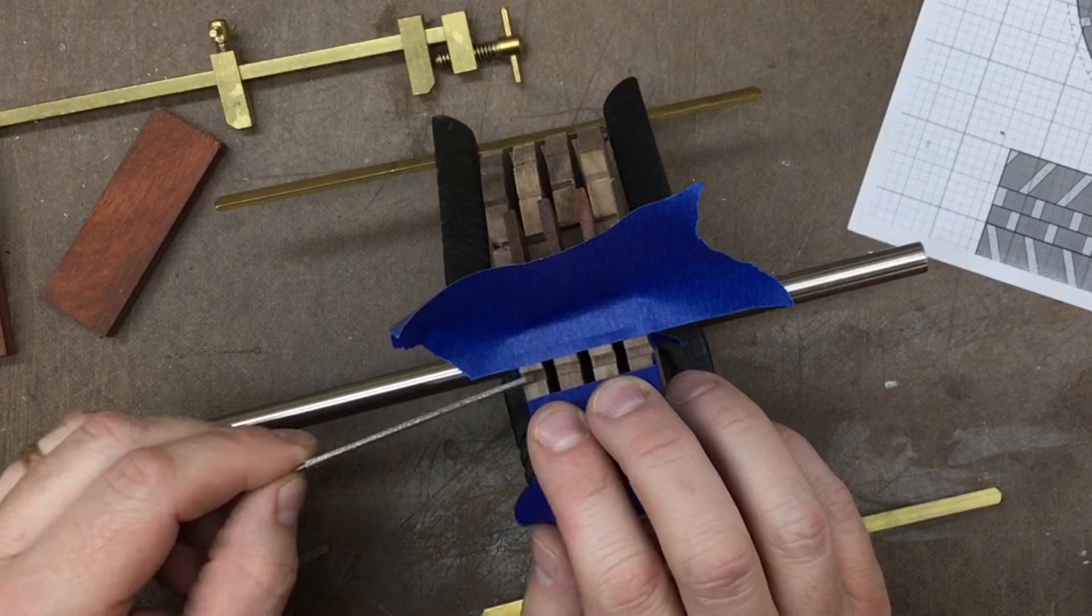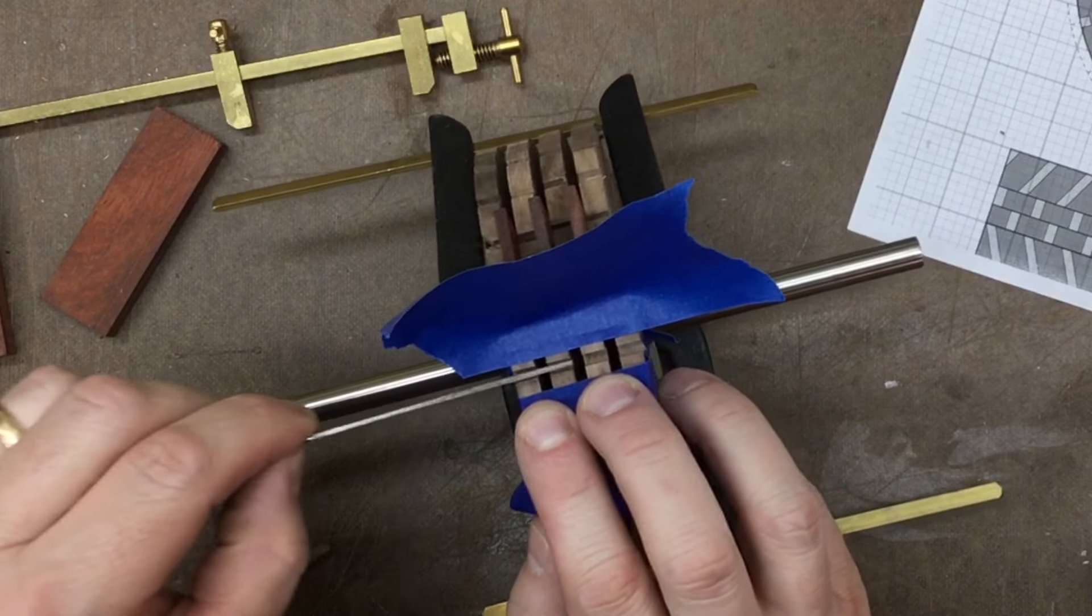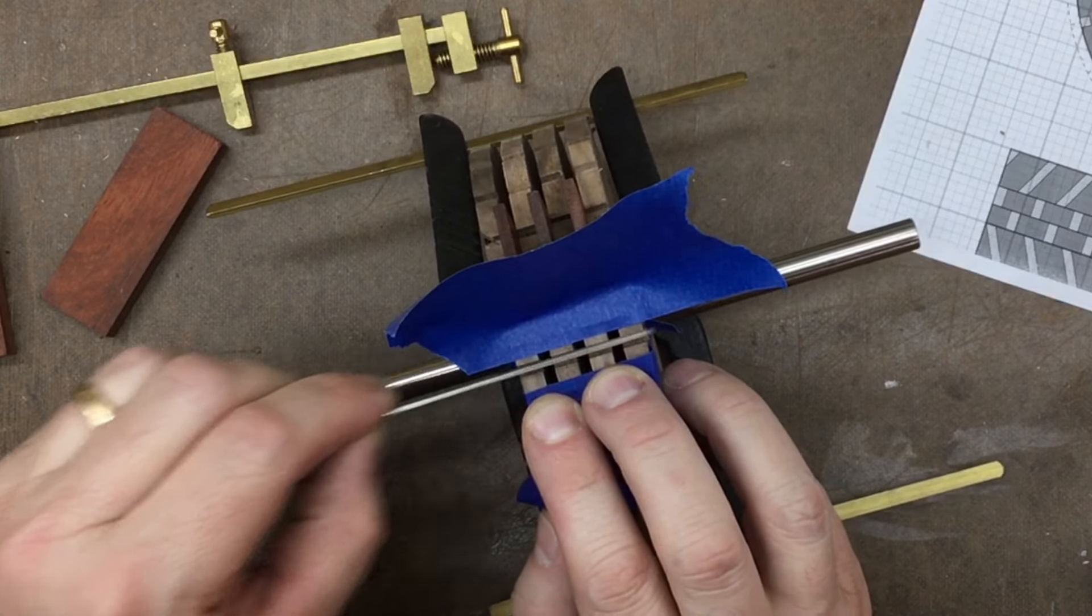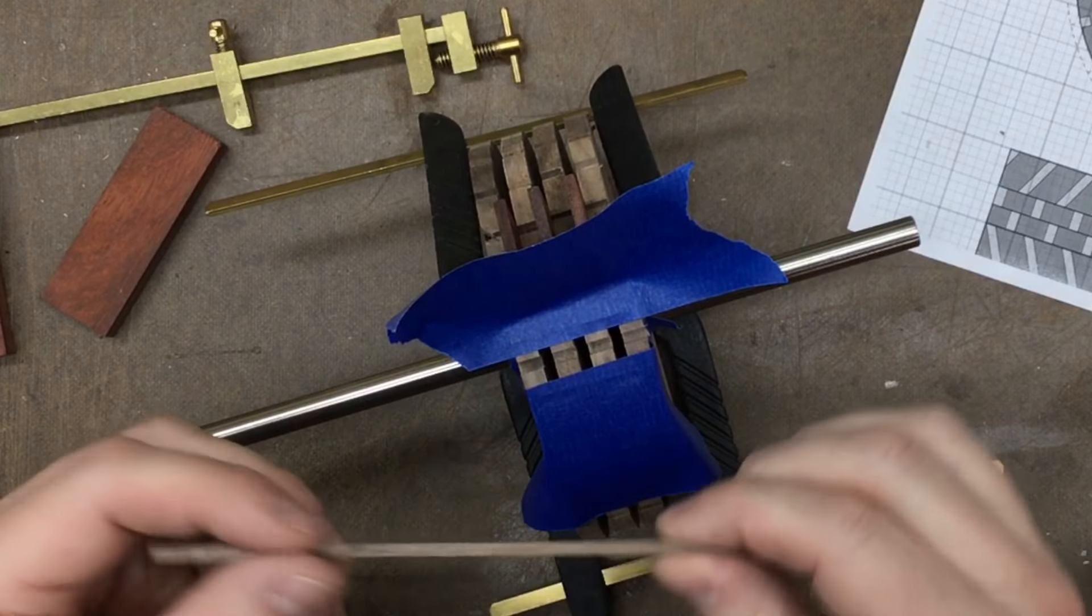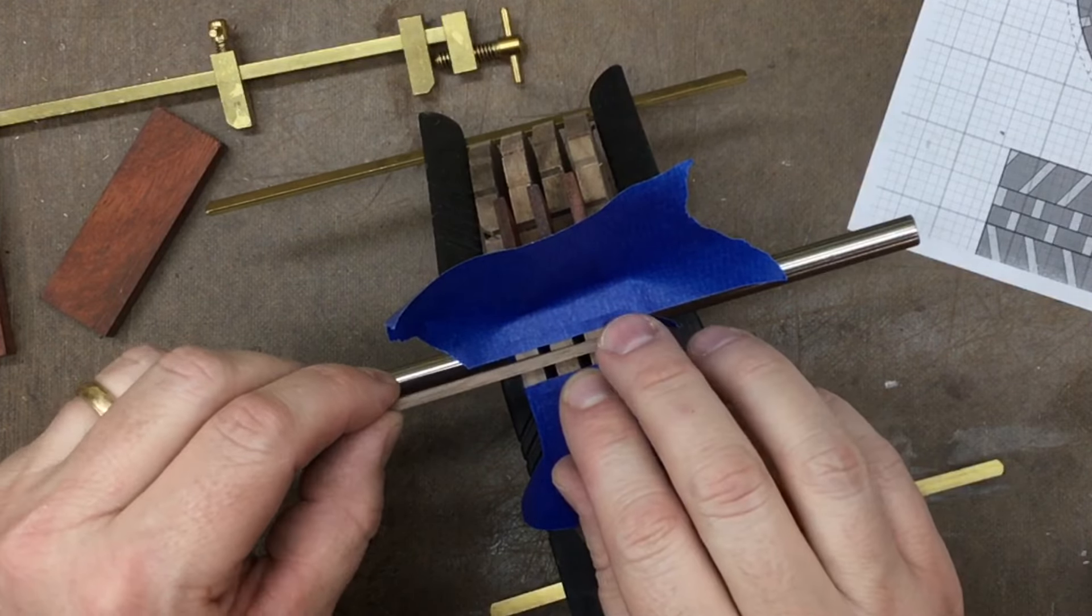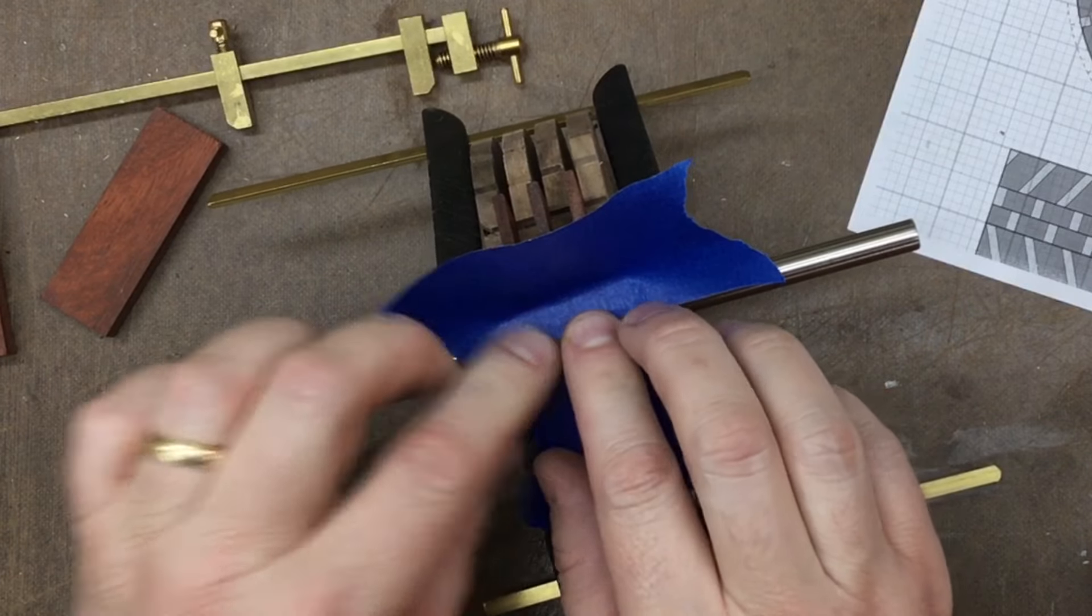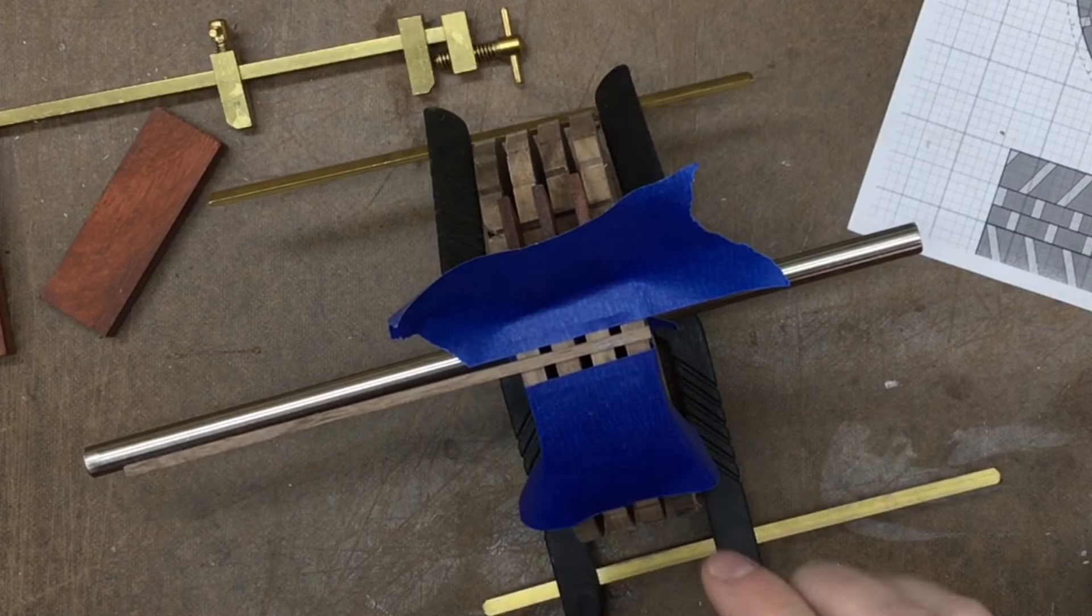I'm just going to get a couple little burrs on these edges that I want to take off because I want it to sit nice and flat down in there. And then after the glue dries we'll cut it apart and then shave this to the correct height.